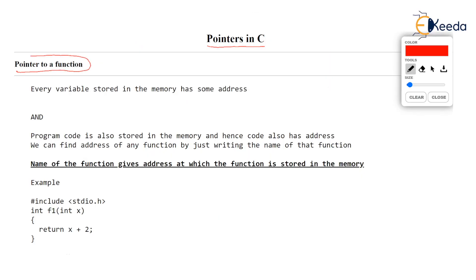Every variable is stored in the memory and every variable has some address. Just as every variable has an address, our program also has an address. A process or a program is also stored in the RAM, so it will also have some address. Hence program code is also stored in the memory and hence code also has address. Now we can find address of any function.